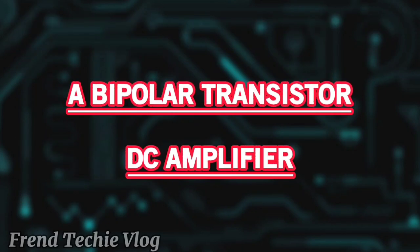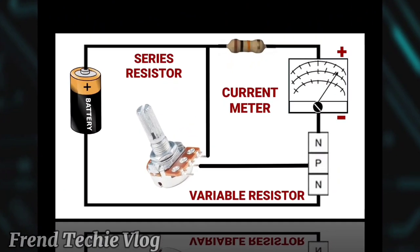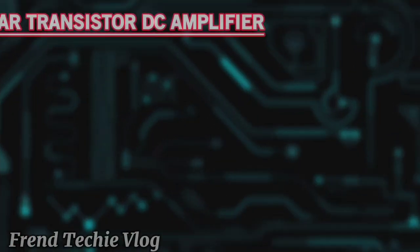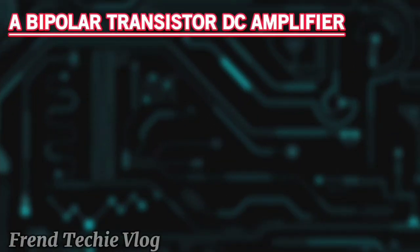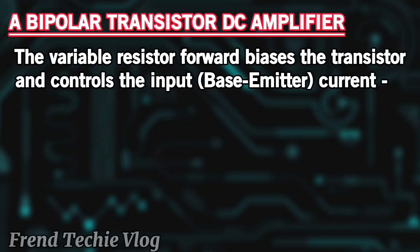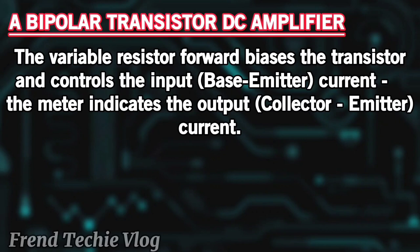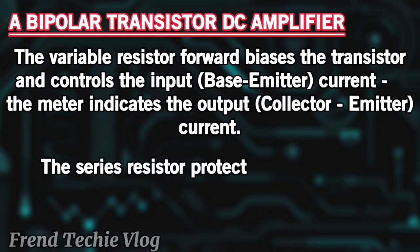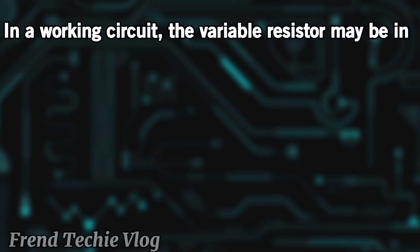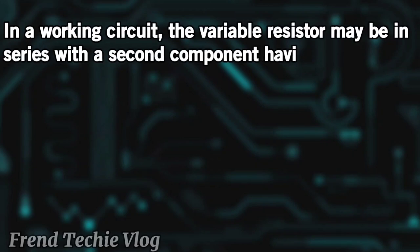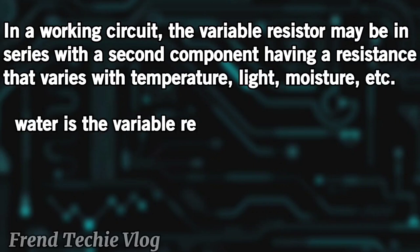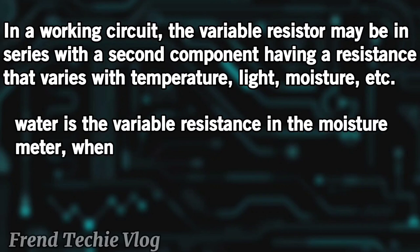This is how a bipolar transistor DC amplifier is used. The variable resistor forward biases the transistor and controls the input current. The meter indicates the output current. The series resistor protects the meter from excessive current. In a working circuit, the variable resistor may be in series with a second component having a resistance that varies with temperature, light, or moisture. Water is the variable resistance in the moisture meter.